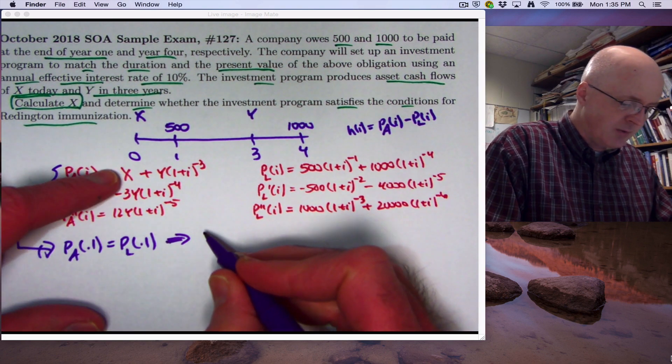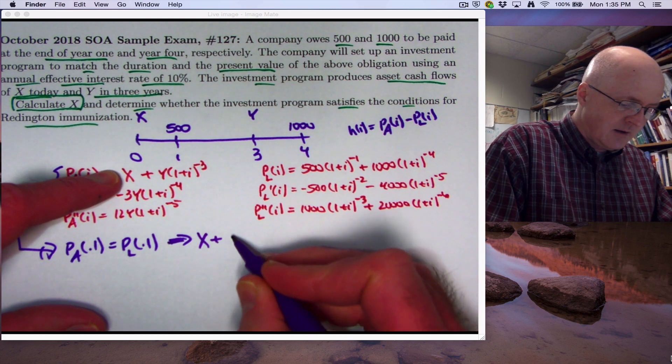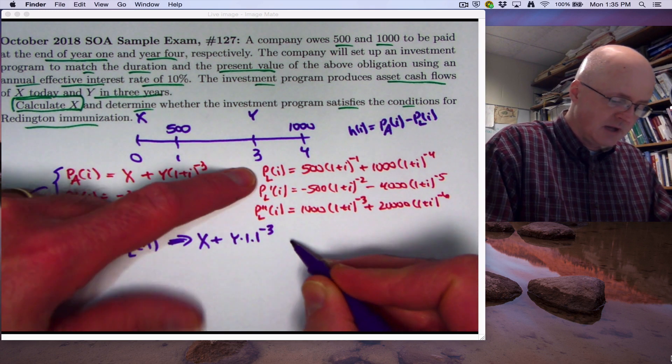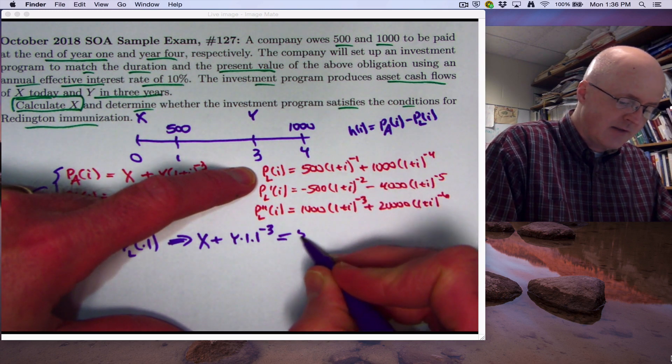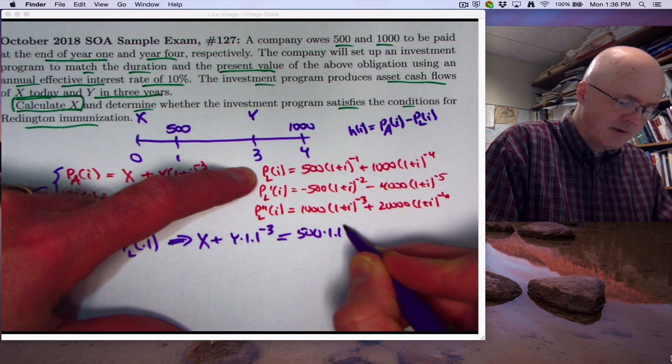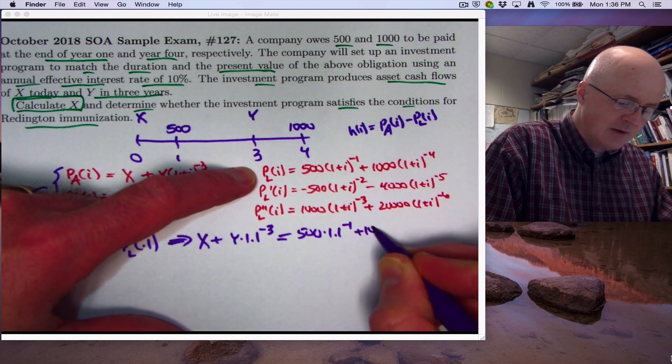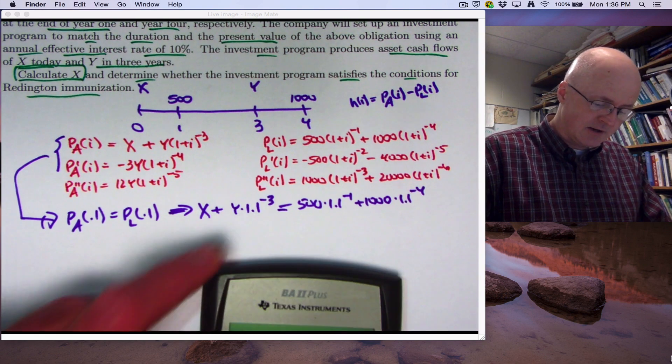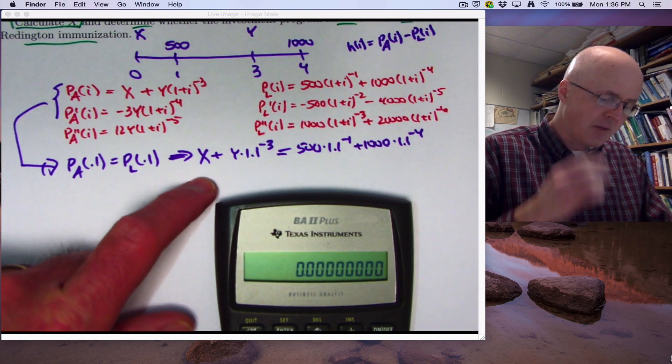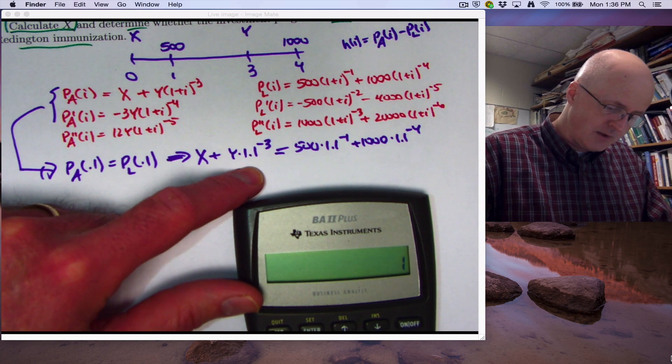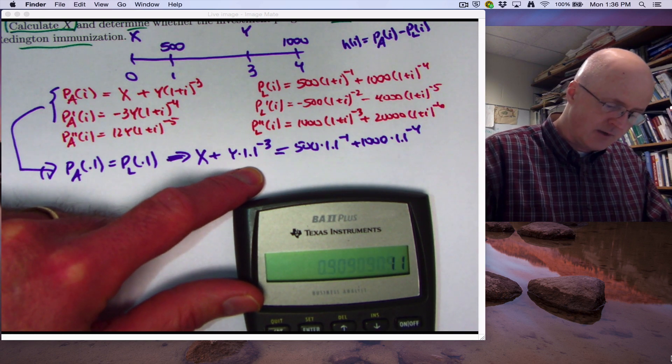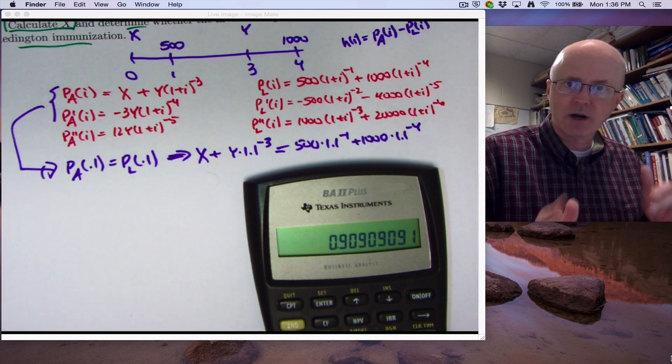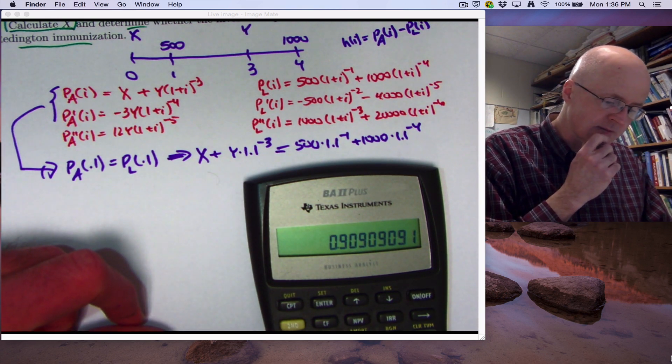So plug in i equals 0.1 here, I get x plus y times 1.1 to the negative three. Plug in i equals 0.1 here and here, and I'll get 500 times 1.1 to the negative one, plus 1000 times 1.1 to the negative four. I'm going to use my calculator here and as fast as I can. I know that's not the most exciting part of these things. So I will need the quantity 1.1 to the negative one, first of all. So there it is right there. That's my v. I'll store that in register 0. I'm going to be storing lots of quantities here, so you're going to want to keep track of things.